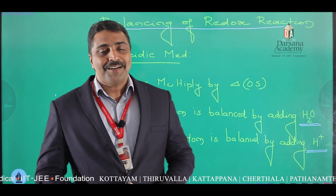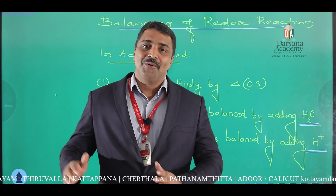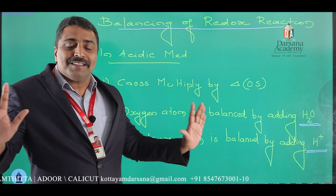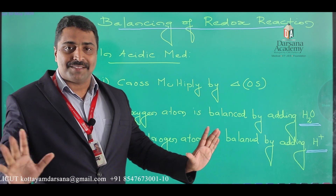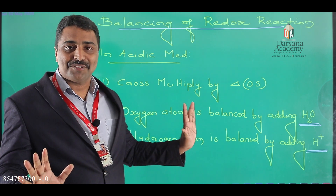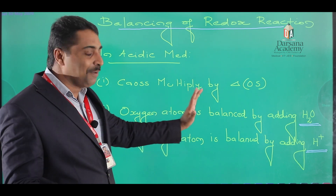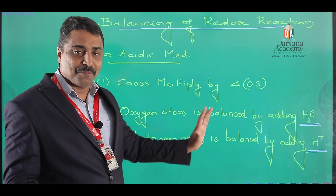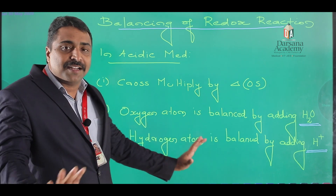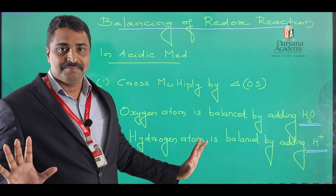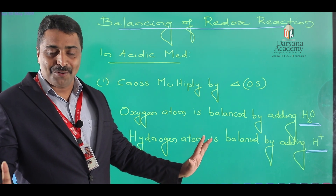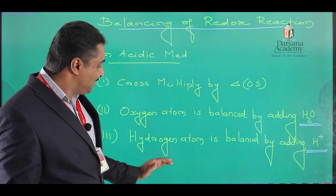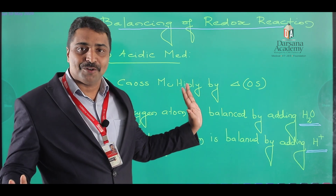In order to balance a redox reaction in acidic medium, we need only three steps. First, cross multiply by the change in oxidation state. Second, balance the oxygen atom by the addition of water molecules. Third, balance the hydrogen atom by the addition of H⁺ ion.